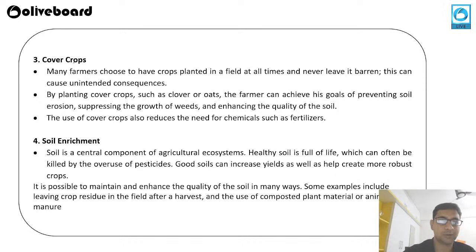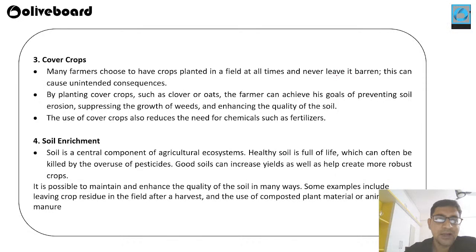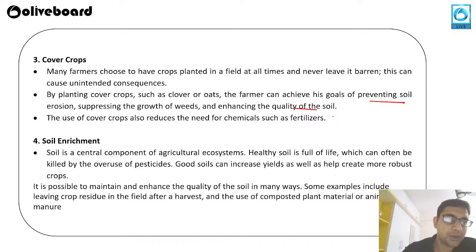The third method is crop cover: many farmers choose to always have crops planted in the field and never leave it barren. By planting cover crops such as oats, farmers can prevent soil erosion, enhance the quality of the soil, and reduce the need for chemical fertilizers.